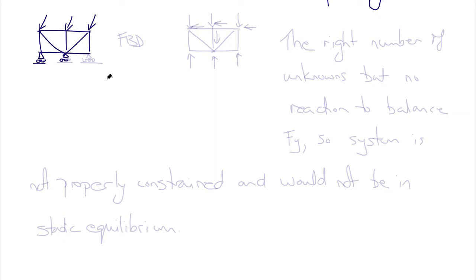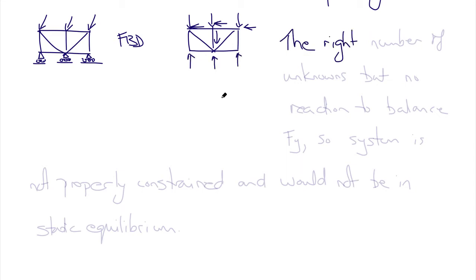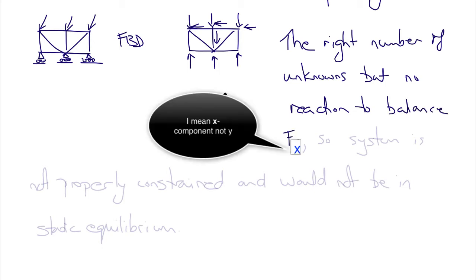Here's another example with the same loads and roller supports, but this time with three supports instead of two. In the free body diagram the applied loads are the same, and we have three reaction forces — the right number of unknowns. However, there is still no reaction to balance the y components of the applied force, so the system is not properly constrained and cannot be in static equilibrium.